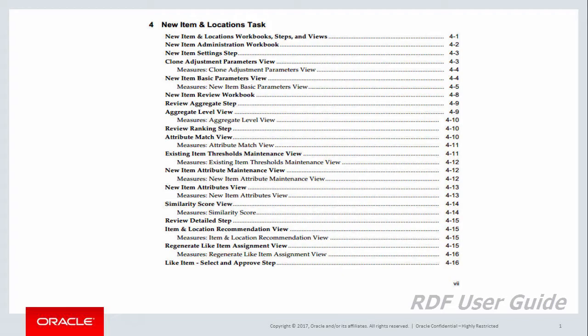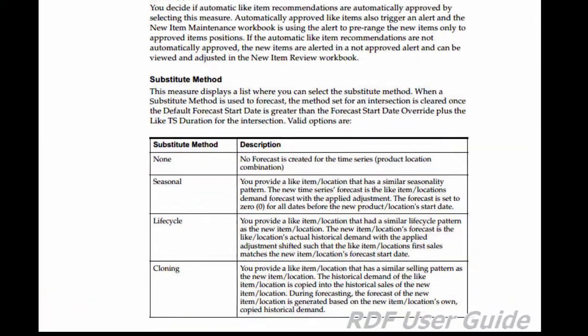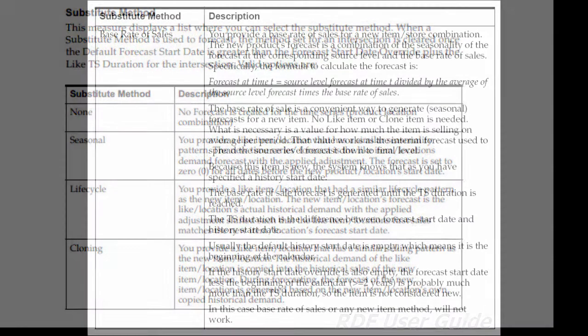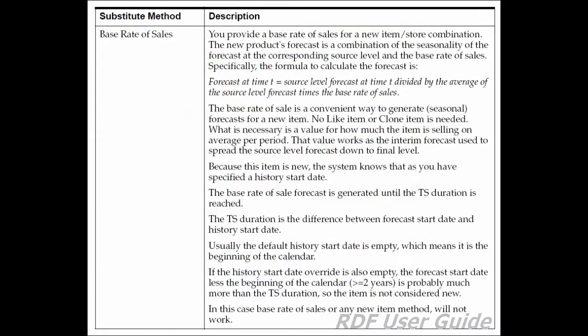Substitute methods include copying sales and copying forecasts. These methods require a like item in order to be forecasted by RDF, and assigning like items is a manual, time-consuming, and potentially inaccurate process. Another option which does not require a like item is base rate of sales. To learn more about base rate of sales, let's go to the new item basic parameters view.